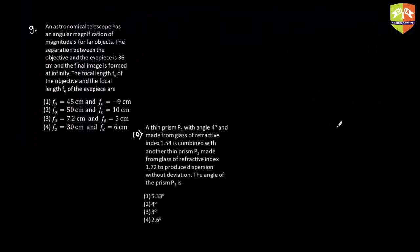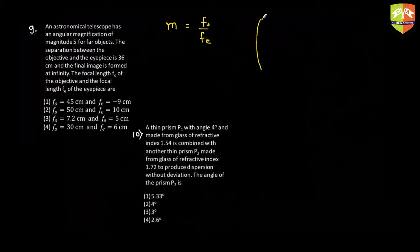Question 9 — Lalitha is asking: do you remember the magnification of an astronomical telescope when object and image both are at infinity? It is fo by fe. You can quickly draw a diagram also representing the telescope.